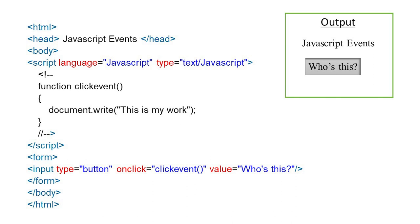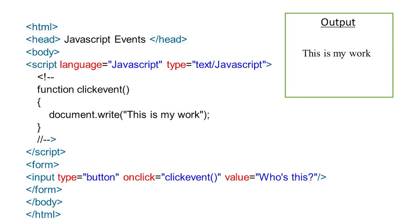The output of this program shows 'JavaScript Events' as the heading and a button labeled 'Who is this'. When we click the button, the onclick event fires, the button disappears, and 'This is my work' is displayed as the final output from the clickEvent function's document.write. To summarize: the heading is 'JavaScript Events', the button 'Who is this' appears, and after clicking, the button disappears and 'This is my work' is shown.